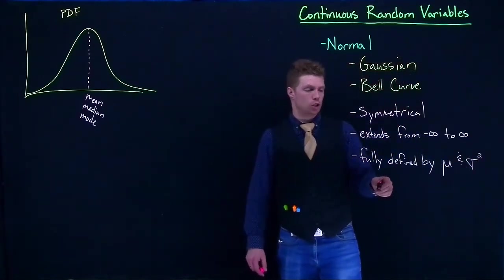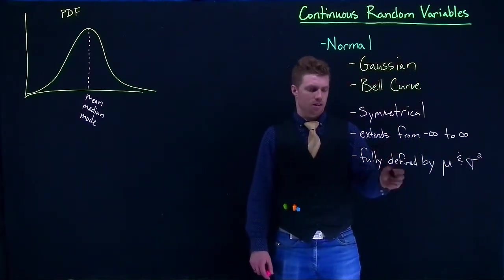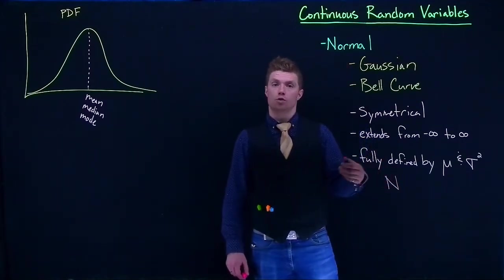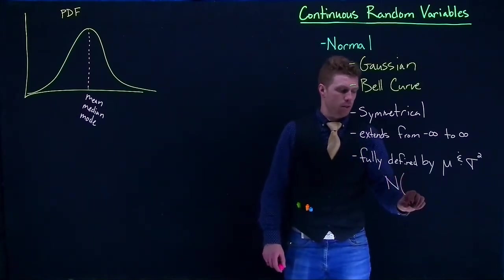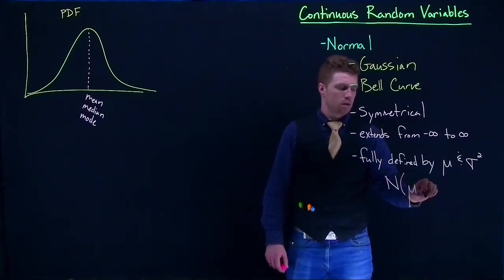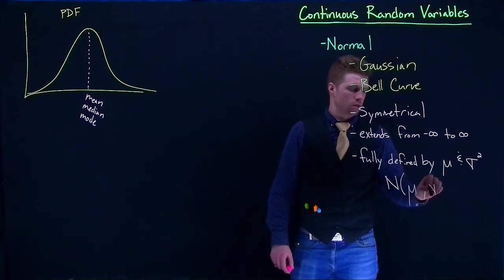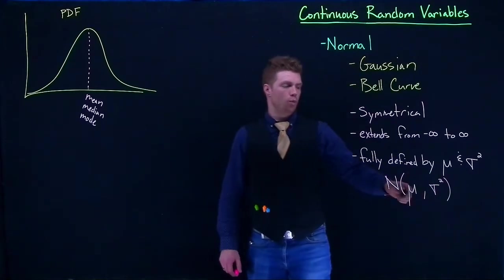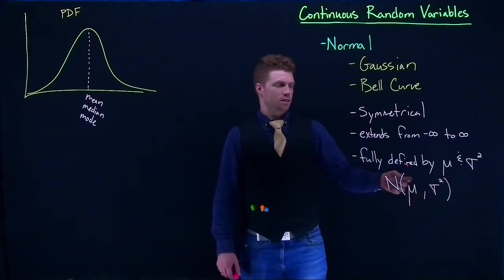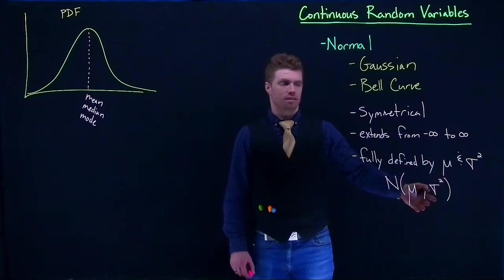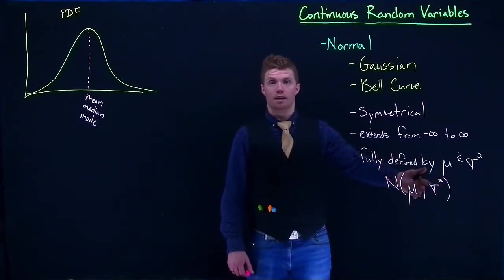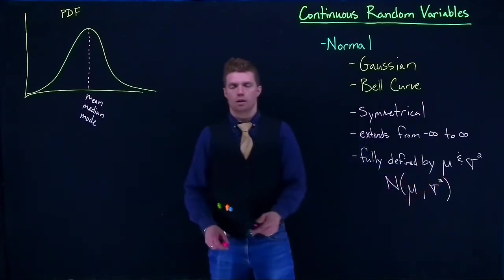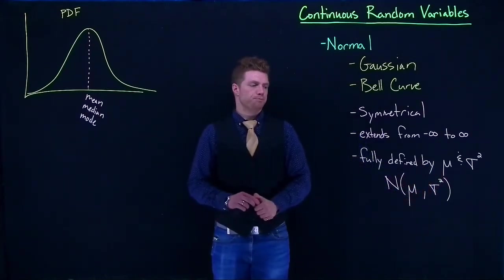And so sometimes you'll see it written shorthand, like in some notation, where it's just this capital N. The capital N represents that it's normally distributed. And then the first number that they put in will be mu, and the second one is going to be sigma squared. One of the easy ways to tell which one is which is the second one should have, if it has units in it, the units are going to be squared as well. So you know that this guy is our variance, and the first one is our mean.